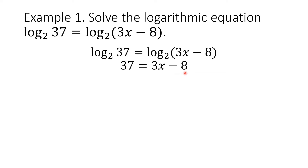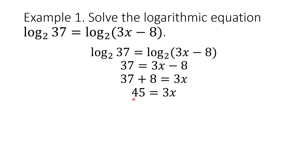Since this is reduced to a linear equation, we may use the properties of equality. By APE, we add positive 8 to both sides, and we get 37 plus 8 equals 3x. 37 plus 8 is 45, so we have 45 equals 3x. By MPE, we divide both sides by 3, and we get 45 divided by 3 is 15 equals x. By reflexive property, x equals 15.